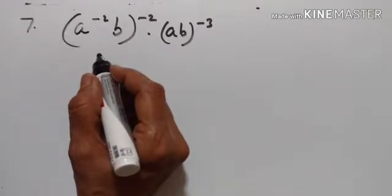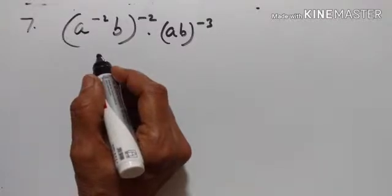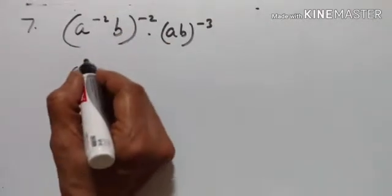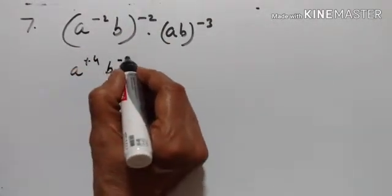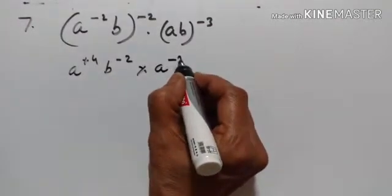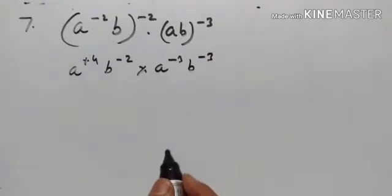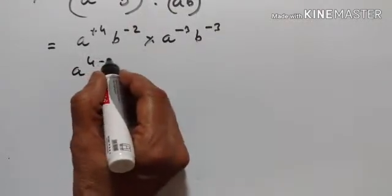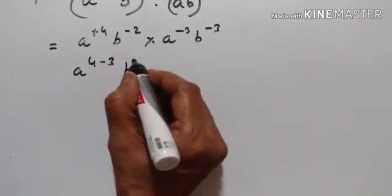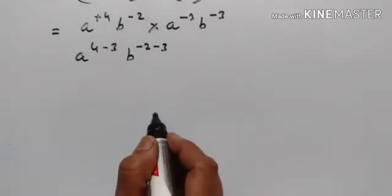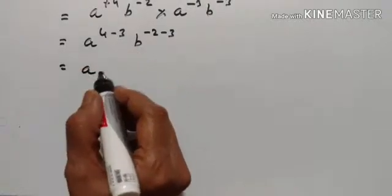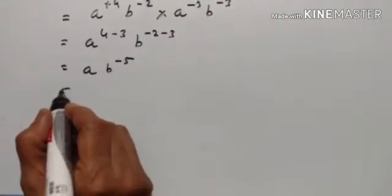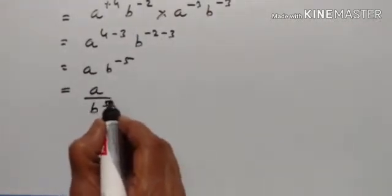7th problem. Here we have to simplify and express as positive indices. This is a raised to the power of minus 2 into minus 2 equals plus 4. b raised to the power of minus 2, into a raised to the power of minus 3 and b raised to the power of minus 3. a raised to the power of 4 plus minus 3, b raised to the power of minus 2 plus minus 3: a raised to the power of 1, b raised to the power of minus 5, which equals a upon b raised to the power of minus 4.